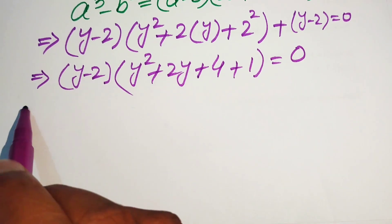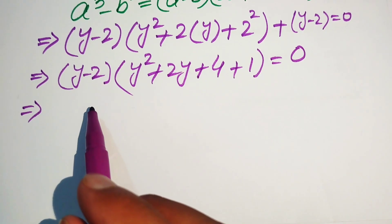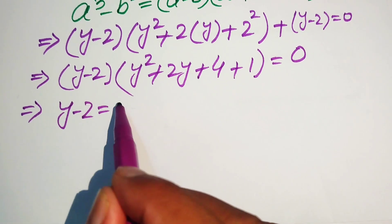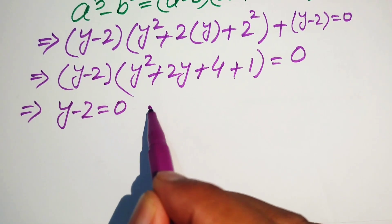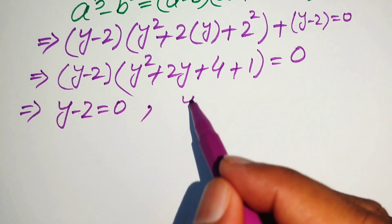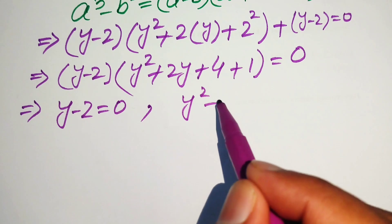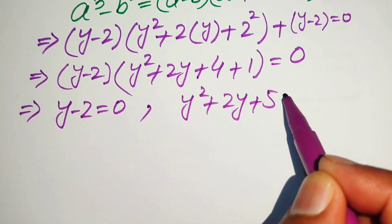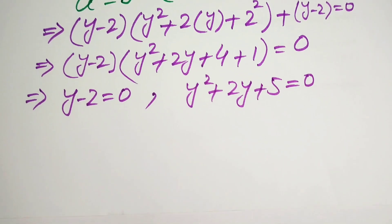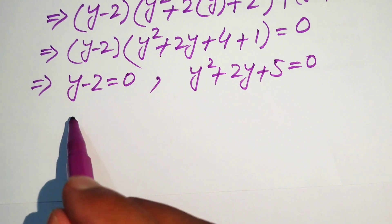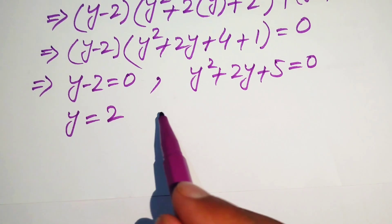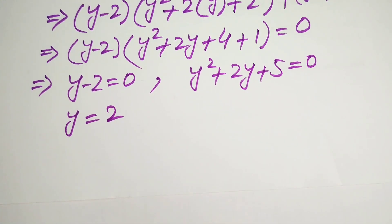We now have two cases. The first case is y minus 2 equals 0, and the second case is y squared plus 2y plus 5 equals 0. From the first case, we easily get y equals 2. For the second case, we need to use the quadratic formula.